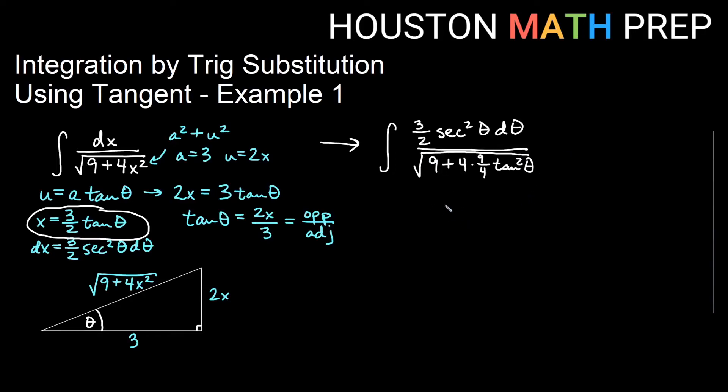Let's clean this up a bit. First, I'll bump this 3 halves out. So we'll say 3 halves integral of secant squared theta d theta. And then down here, the 4s reduce, so we get the square root of 9 plus 9 tan squared theta.